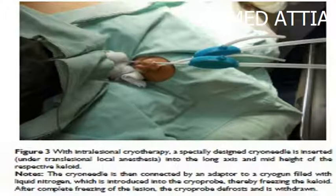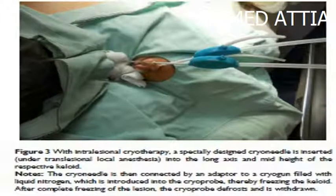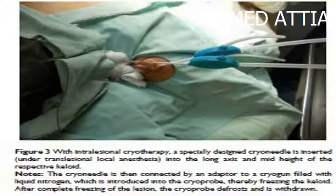Figure 3 demonstrates intralesional cryotherapy, in which a specially designed cryoneedle is inserted under local anesthesia into the long axis and mid-height of the respective keloid. The cryoneedle is then connected by an adapter to a cryogun filled with liquid nitrogen, which is introduced into the cryoprobe, thereby freezing the keloid. After complete freezing of the lesion, the cryoprobe defrosts and is withdrawn.